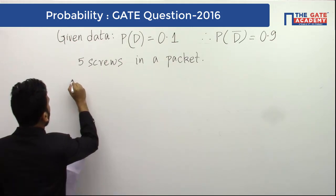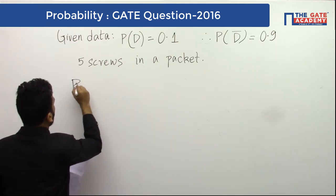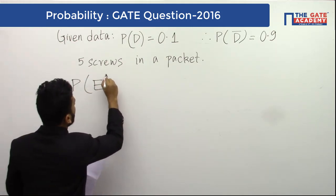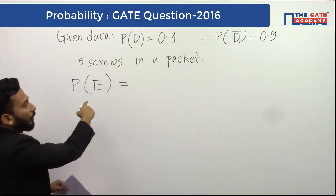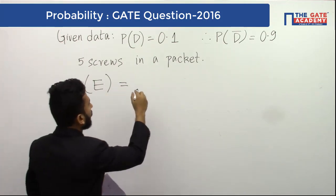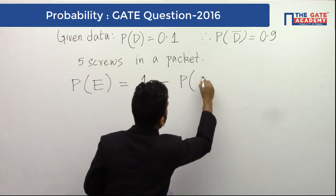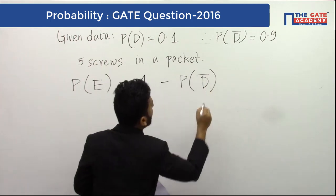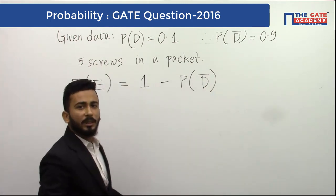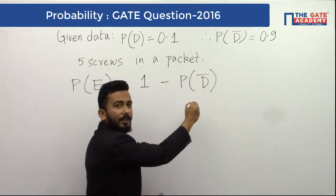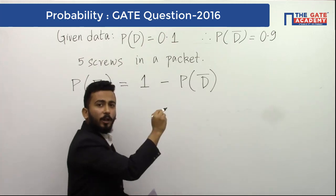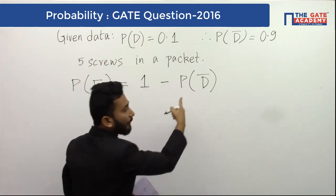So the probability of the event, which is probability of getting replaced, will be 1 minus probability that there are no defective screws. So we need to find the probability of a non-defective screw. Let us find this.